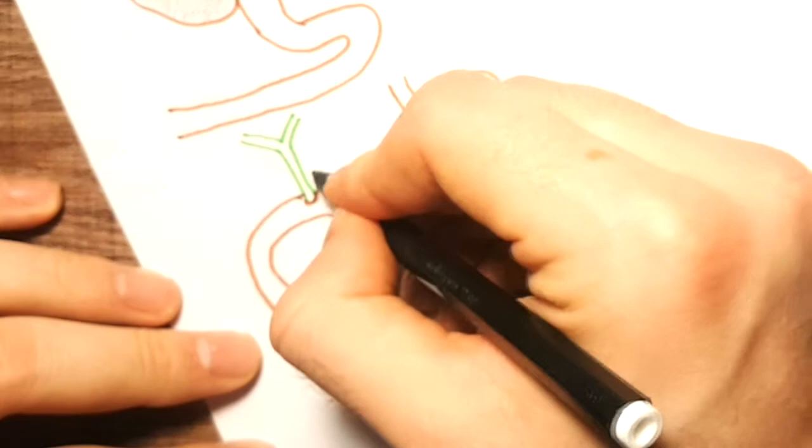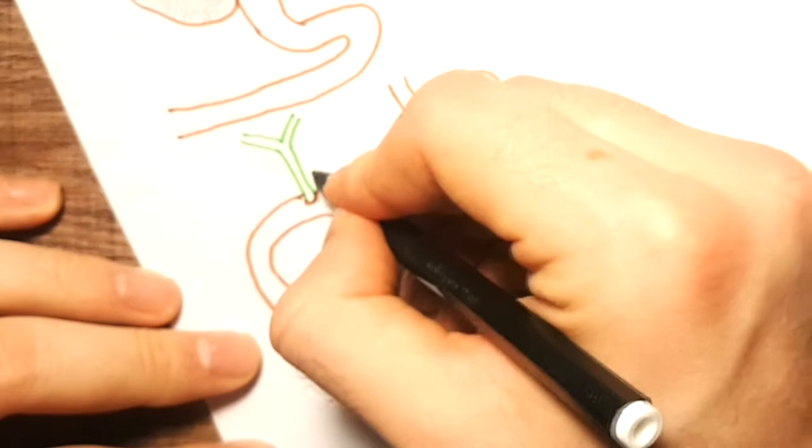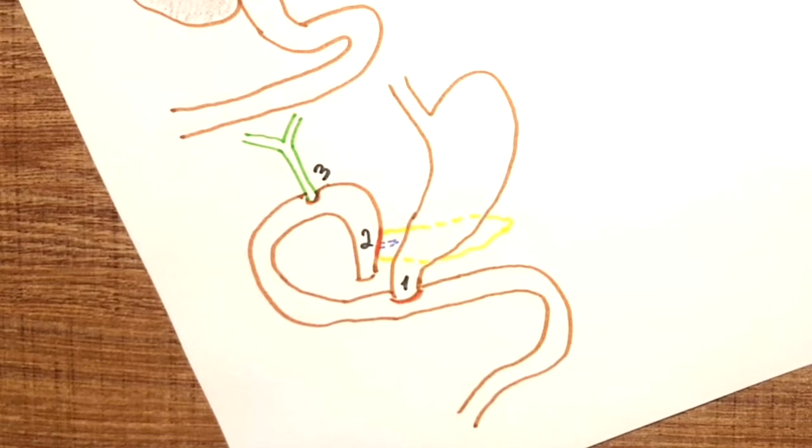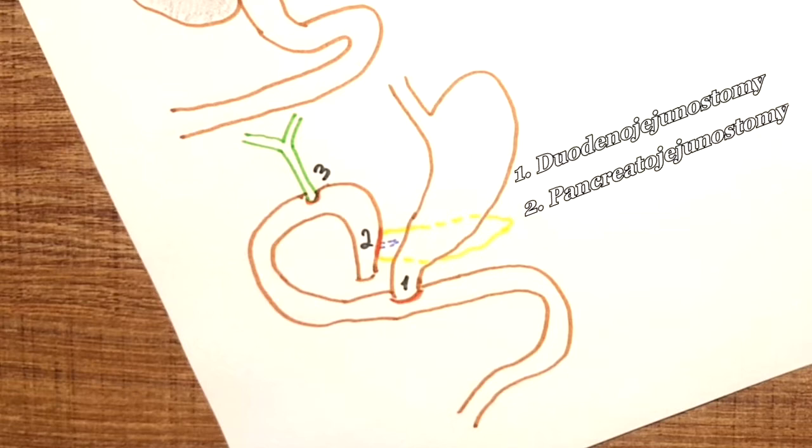Thus we see three different anastomoses. The first unites the proximal part of the duodenum with the jejunum, so we call it duodenojejunostomy. The second unites the resected pancreas and pancreatic duct with the jejunum. So technically there are two anastomoses: pancreatojejunostomy and pancreaticojejunostomy.